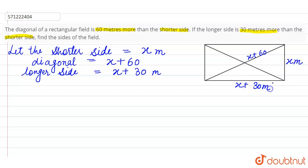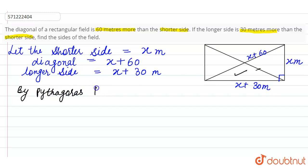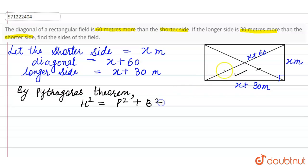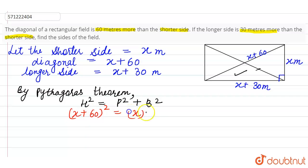We know that each angle of a rectangle is 90 degrees, so we can apply the Pythagorean theorem to this rectangle. By the Pythagorean theorem: hypotenuse squared equals perpendicular squared plus base squared. The hypotenuse is the diagonal, the perpendicular is the shorter side, and the base is the longer side. So (x + 60)² = x² + (x + 30)².